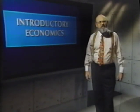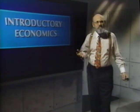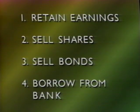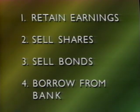When households save, where do the savings go? When firms invest, where do they get the funds to finance their spending? There are four ways in which firms can finance their investment expenditures: they can retain some earnings and not pay out all profits as dividends, they can sell shares on the stock market, they can borrow money by selling a bond, or they can take out a loan from the banks.